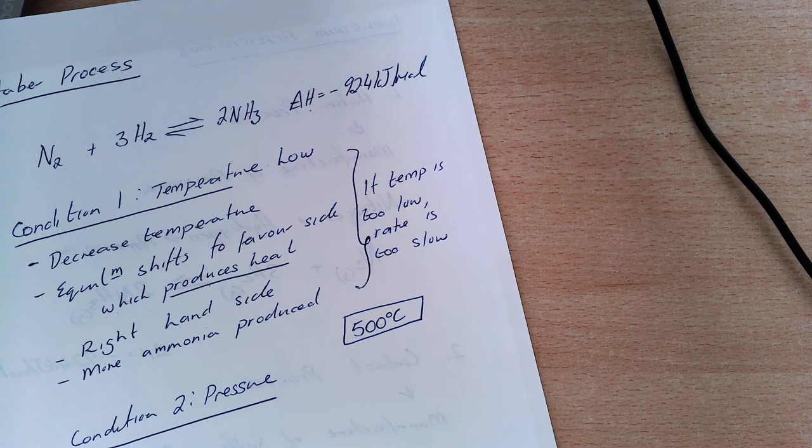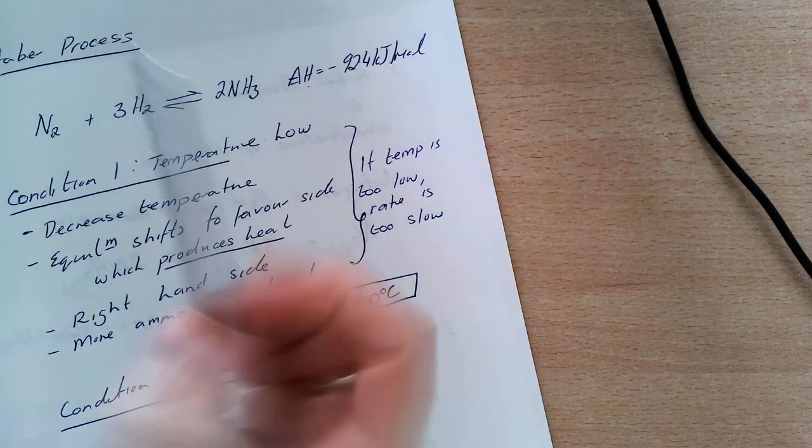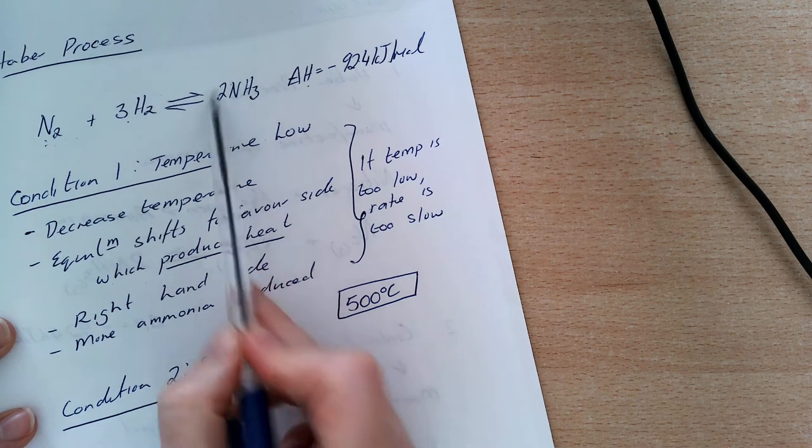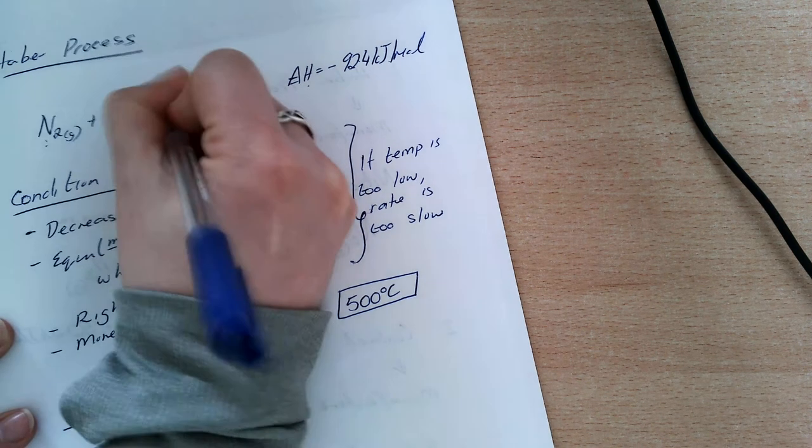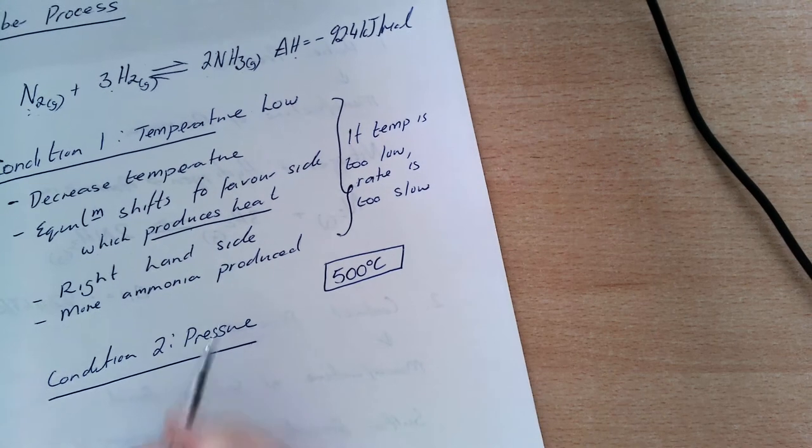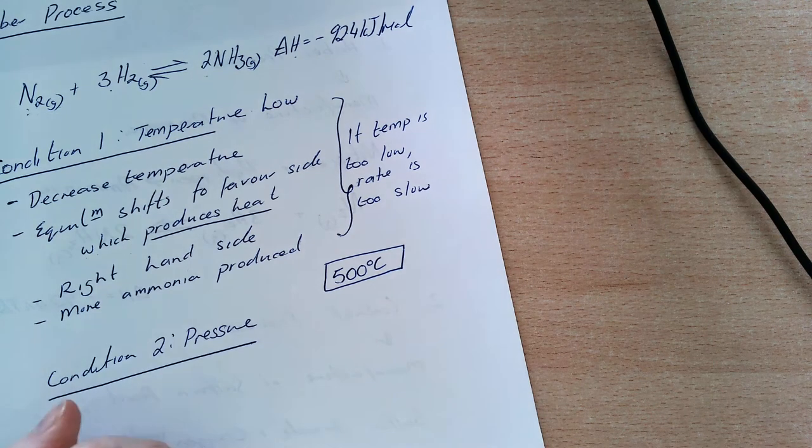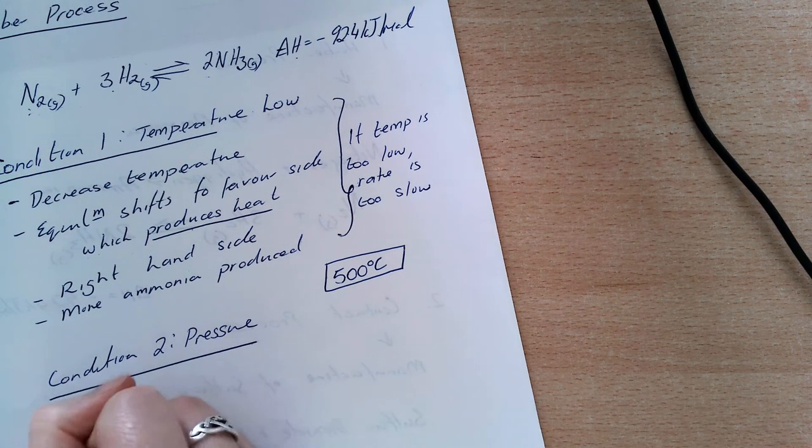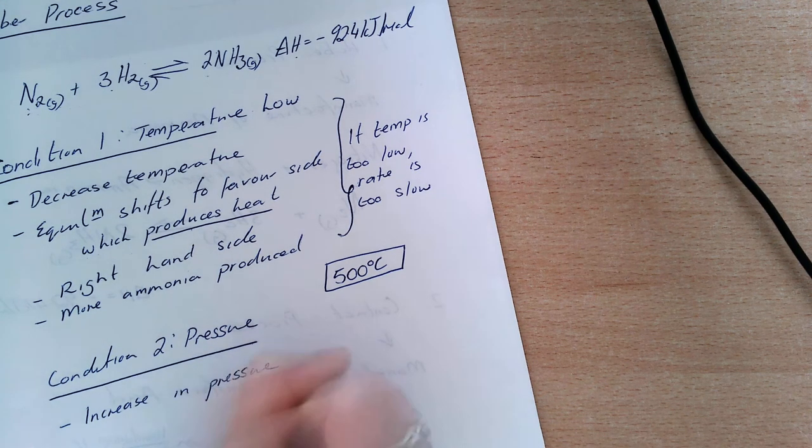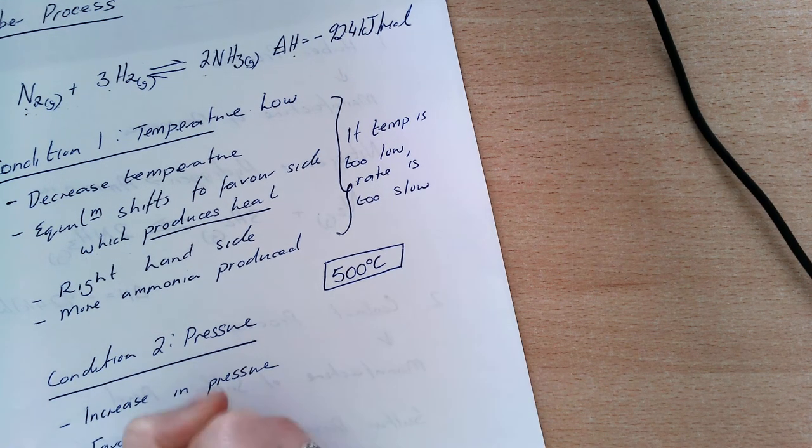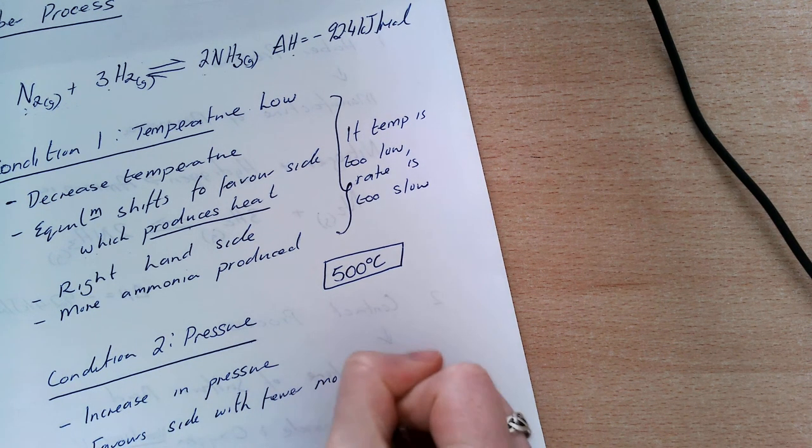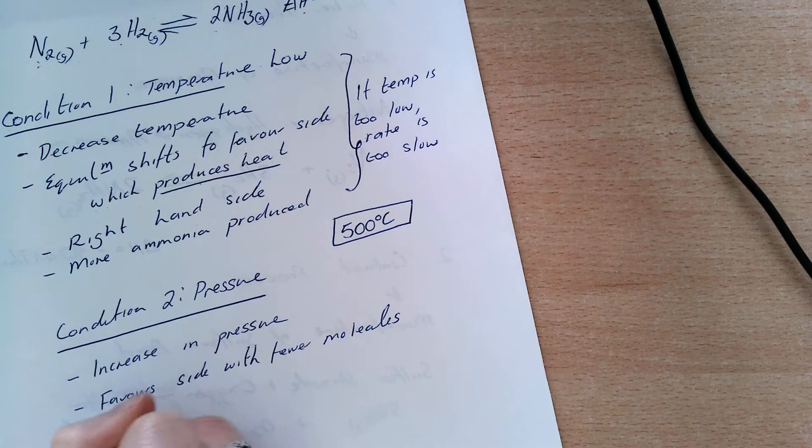Condition two is pressure. If I increase my pressure, I have one and three, so four molecules on my left-hand side, and only two molecules on my right-hand side. Remember, this is all gaseous reaction, so it is affected by chemical equilibrium. I want to favor the right-hand side. An increase in pressure favors the side with fewer molecules, which is the right-hand side.